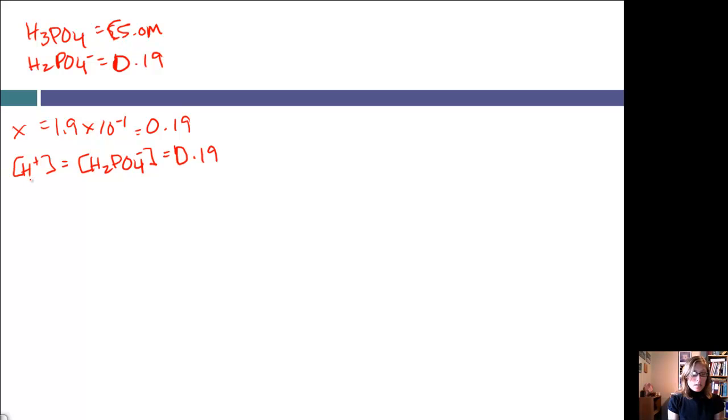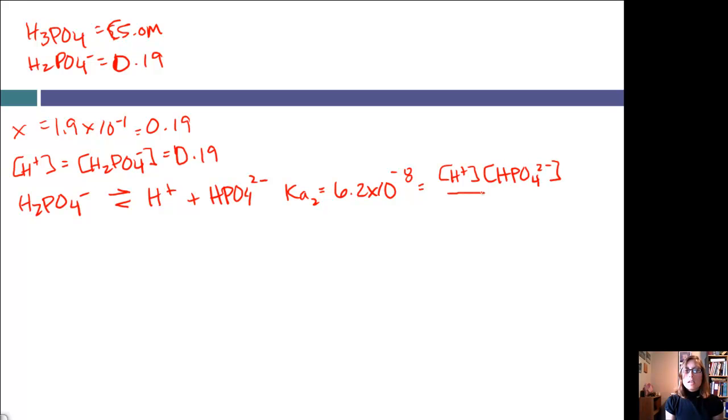We know our H2PO4- is equal to 0.19, so let's find the rest. If we look at the next step, which is to take our H2PO4- and dissociate that, we get H+ and HPO4-2. And Ka2, because this is the step 2 value, is 6.2 times 10 to the negative 8. This is equal to H+ times HPO4-2 divided by H2PO4-.